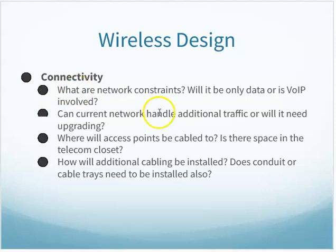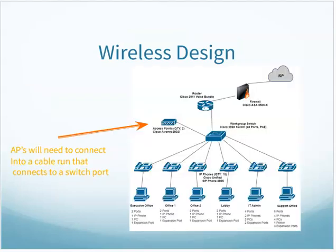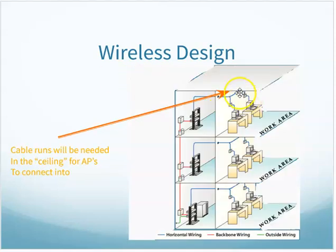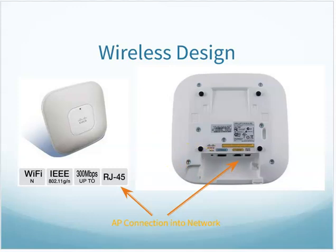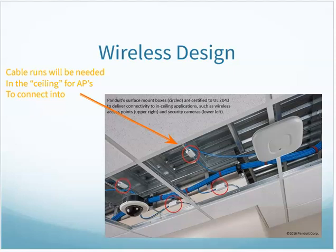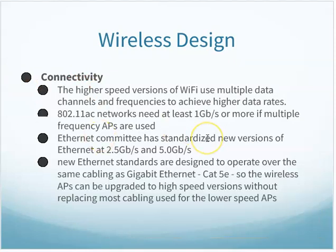Connectivity planning: can the current network handle additional traffic? Will the access points be cabled in — is there space in the ceiling? Do you need fiber or copper, and is there conduit available? Access points typically go in the ceiling of workspaces or hallways and need a cable run and outlet box. Notably, newer Ethernet 2.5 and 5 Gbps standards were developed to support newer wireless access points on older cabling infrastructure, helping upgrade wireless without replacing all the cabling.